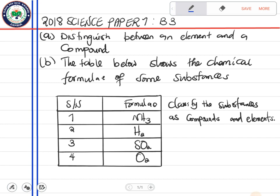Part A says distinguish between an element and a compound. Part B, the table below shows the chemical formulae of some substances - these are the numbers and formulas of each substance. The question says classify the substances as compounds or elements. Let's first look at question A.